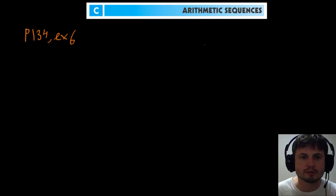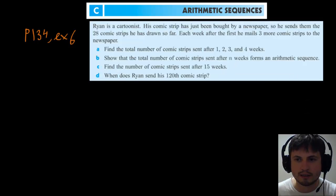And now let's just take a look at one of the examples from the book. This is an example from page 134, example six, I'm going to put it right here. And let's try to do it together. So it's about Ryan who is a cartoonist and he's making comic strips. He has to send them 28 comic strips he has drawn so far. Each week after the first he mails three more comic strips to the newspaper. Now you have to find the total number of comic strips sent after one, two, three, and four weeks. So how do we do this?